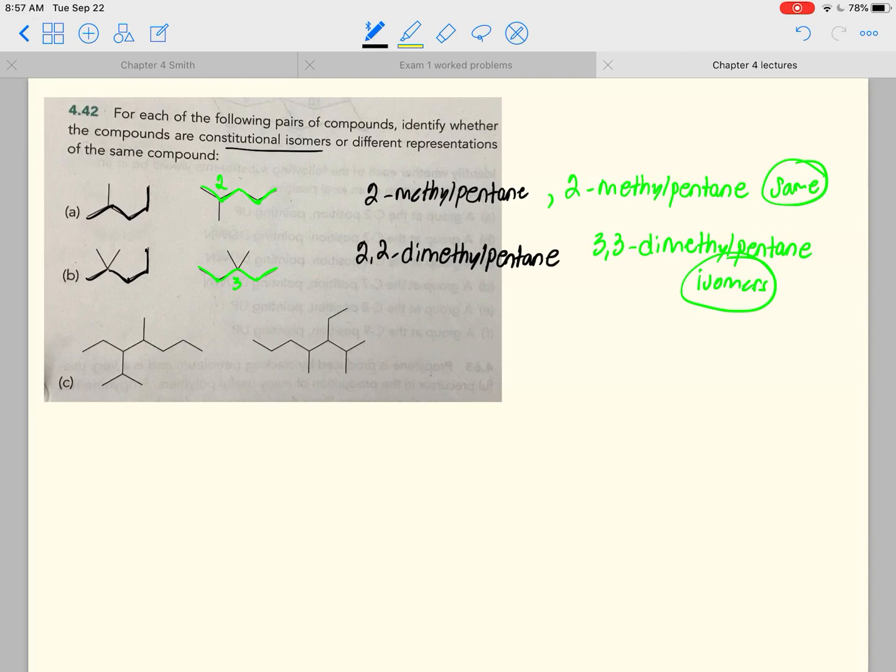Our next problem, C, we've got the longest chain, and when you select the longest chain, you want to select the longest chain that has the most number of substituents. So that would be the correct way of doing this. Okay, that has 7 carbons.